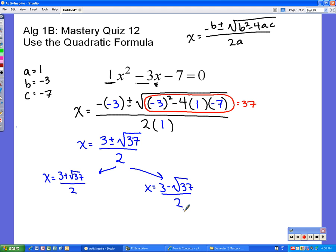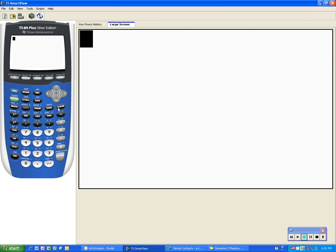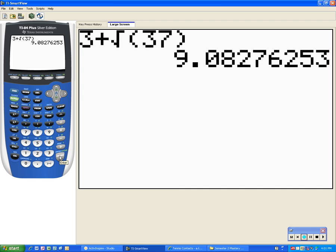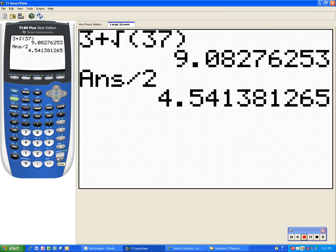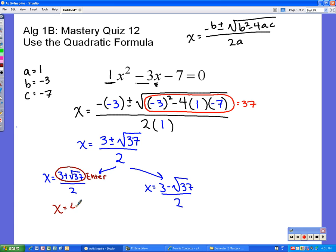I'm going to need the calculator again. But, what I want you to be careful of is I want you to type in the entire top, stop, press enter, and then type in divided by 2. So, what that's going to look like is 3 plus the square root of 37, and then you press enter, and then you press divided by 2, and then you press enter. And 4.54 is one of your two answers for this problem. So, x equals 4.54 is one answer.